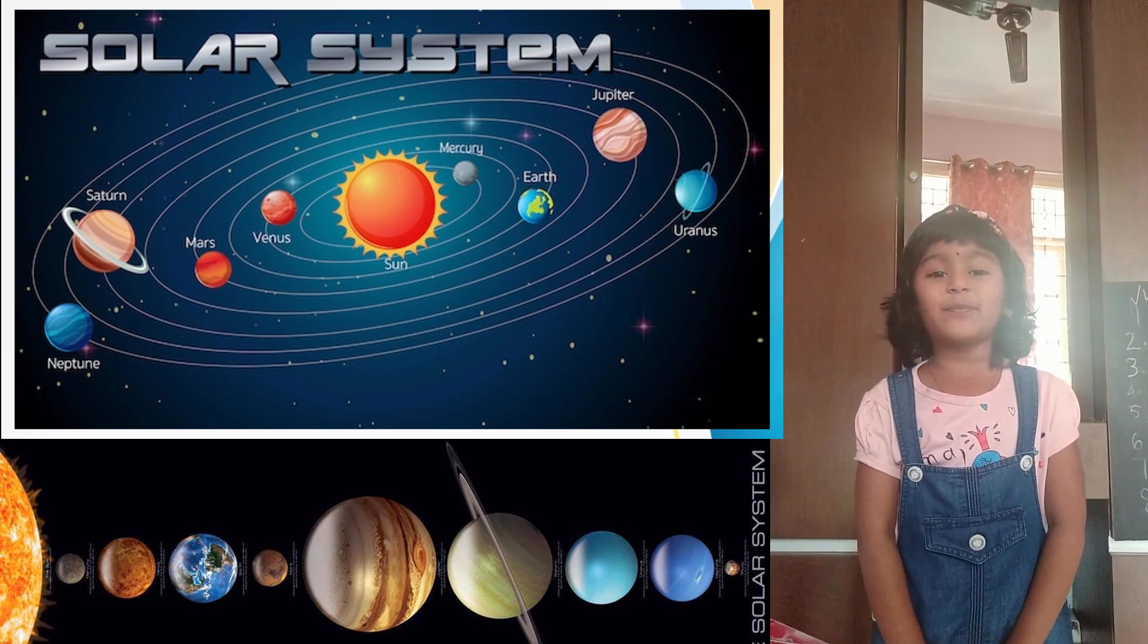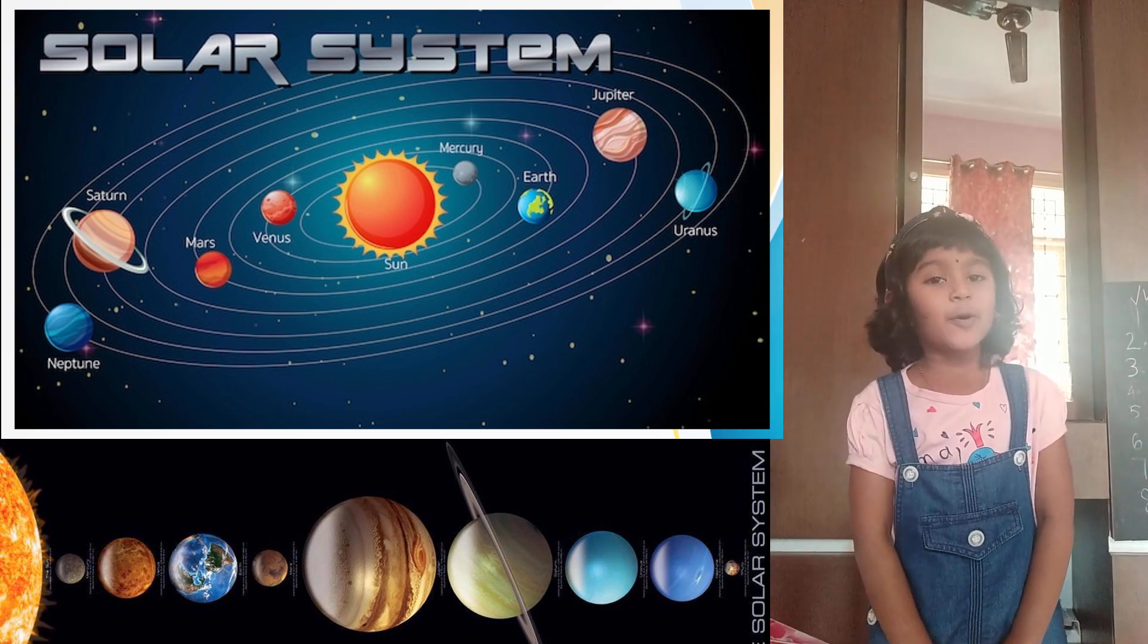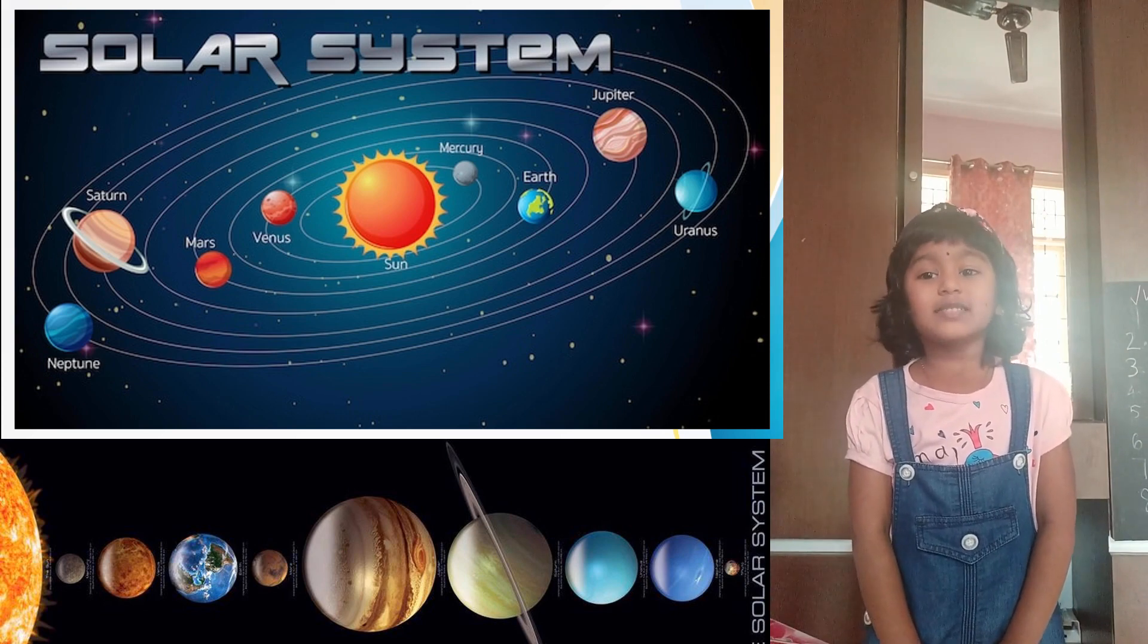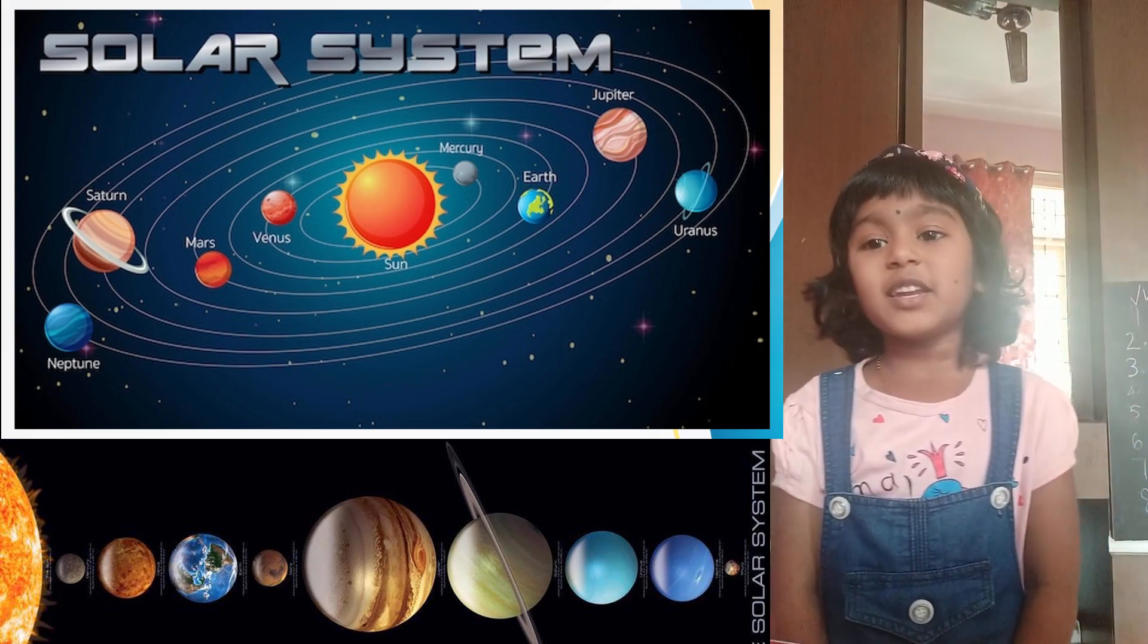It contains 8 planets: Mercury, Venus, Earth, Mars, Jupiter, Saturn, Uranus, and Neptune.